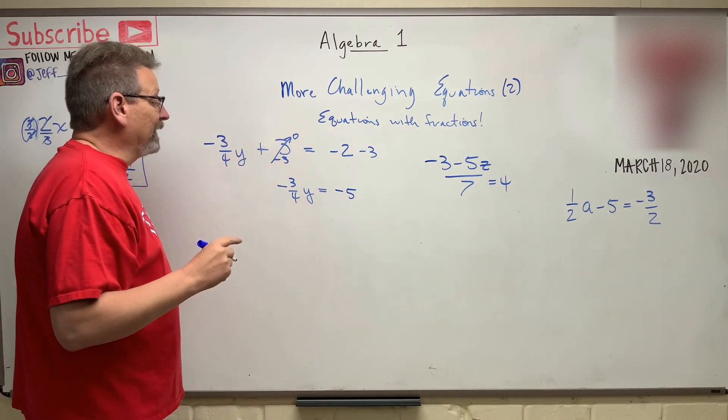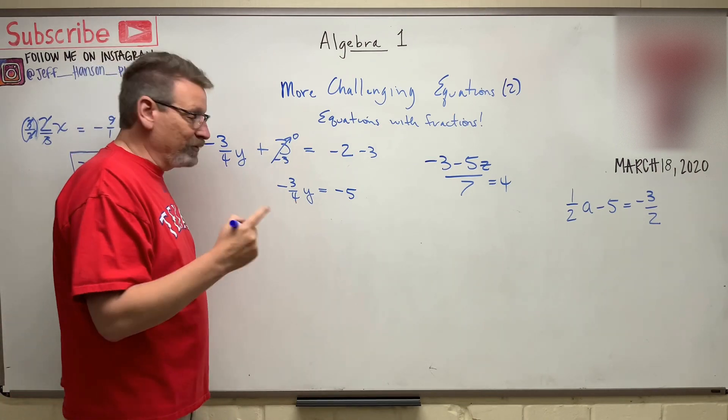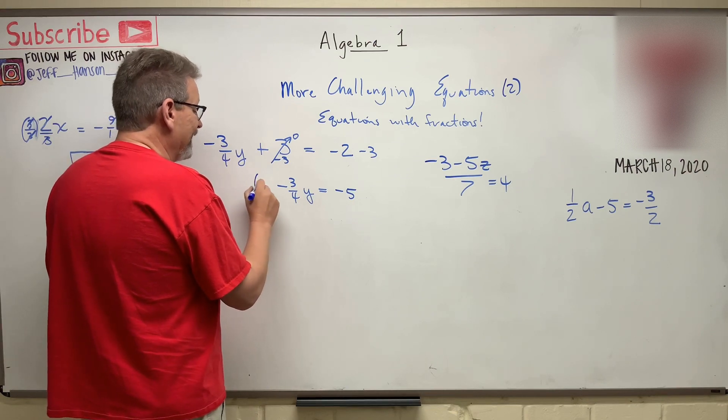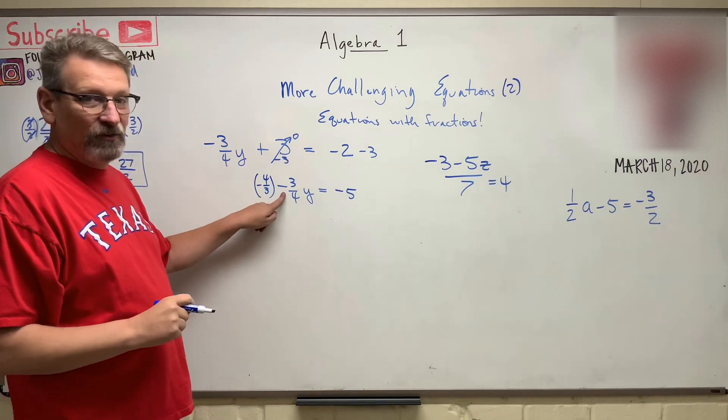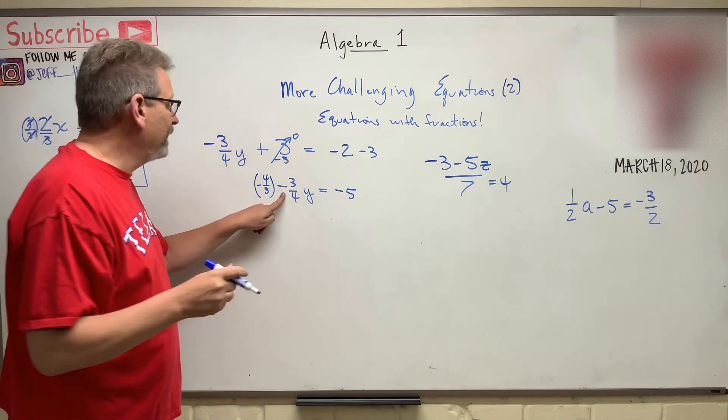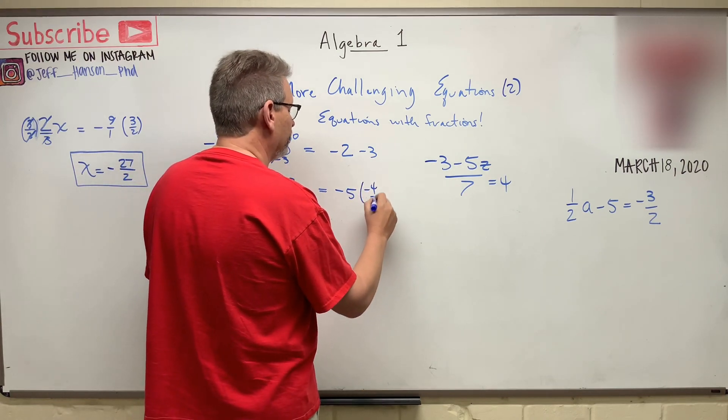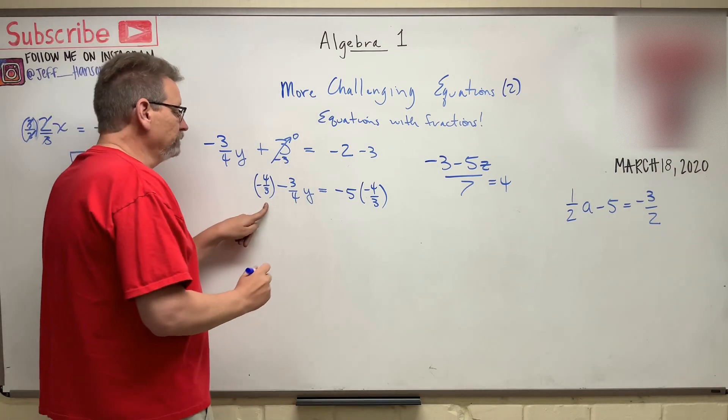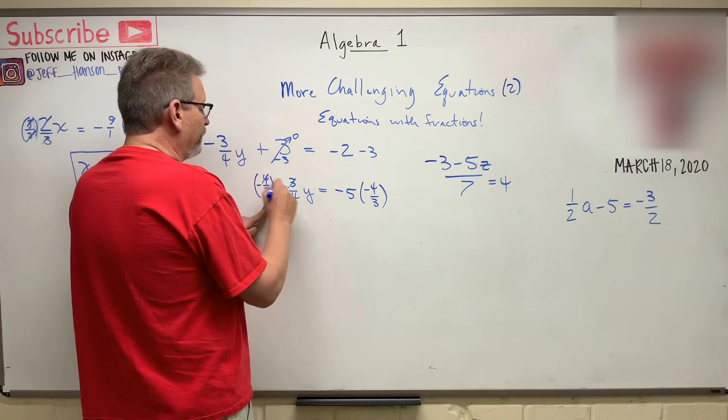Now let's multiply. When I have a fraction, you can multiply it by the reciprocal. So I'm going to multiply this guy by negative four-thirds. Because the negative times the negative makes it what? Positive, right? So I'm going to multiply this side by negative four-thirds. Did the same thing to both sides, didn't I?